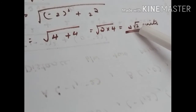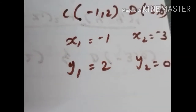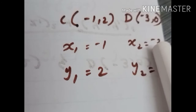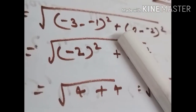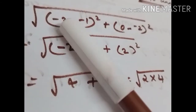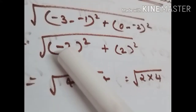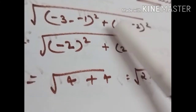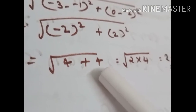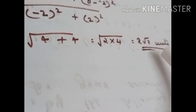Next we find CD, considering points C and D: x1 = -1, y1 = 2, x2 = -3, y2 = 0. Substituting: root of (-3 minus -1) squared plus (0 minus -2) squared = root of (-2) squared plus 2 squared = root of 4 plus 4 = 2 root 2 units. So CD = 2 root 2 units.